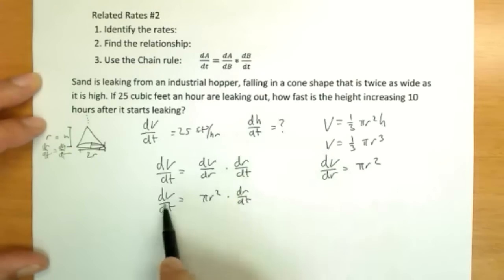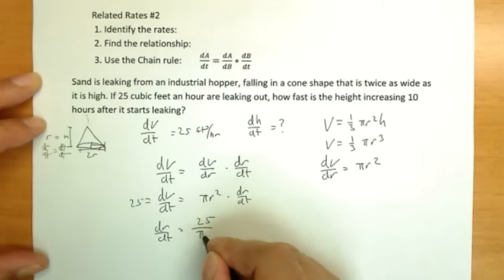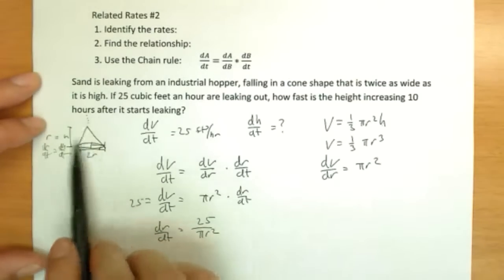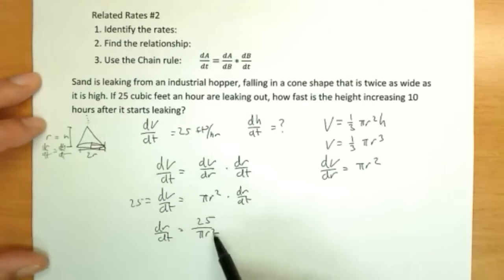So dV/dt equals dV/dr, pi r squared, times dr/dt. And I should have meant to write in the one I already knew. This is 25. So 25 equals pi r squared times dr/dt. Solving for dr/dt, I will divide this to the other side. 25 over pi r squared. So we can see that the radius is not going to change constant with respect to time, it's going to depend on the radius. When the radius is real small, we get a larger change. When the radius starts to get big, 25 cubic feet doesn't make so much difference.